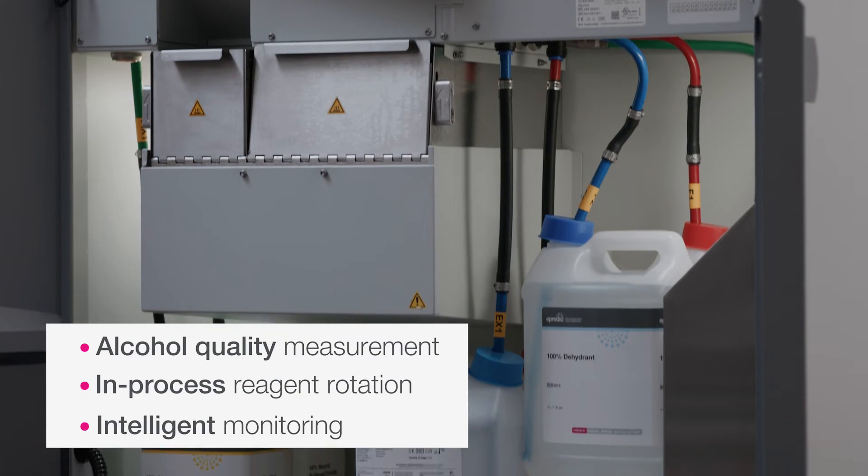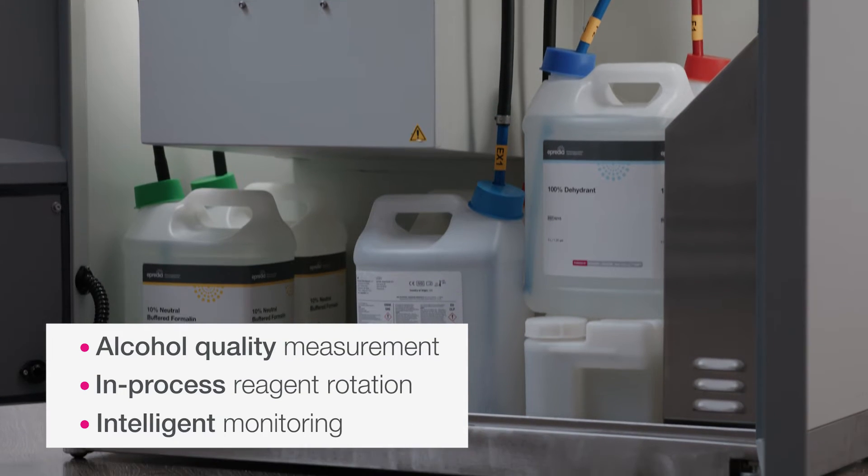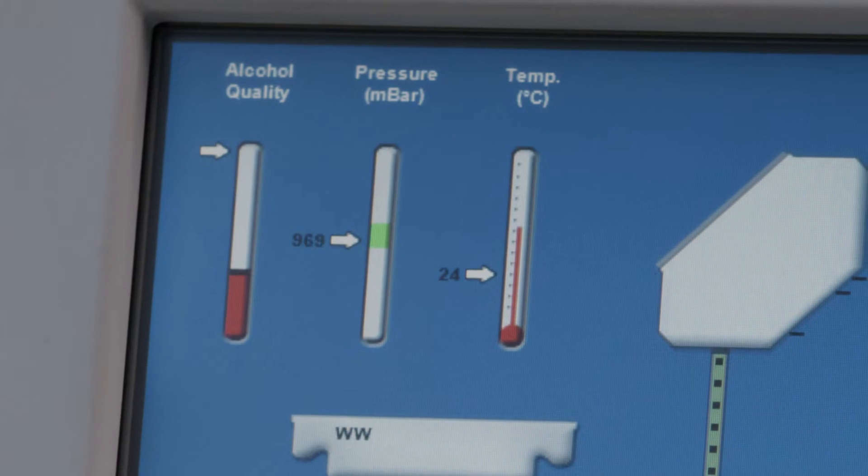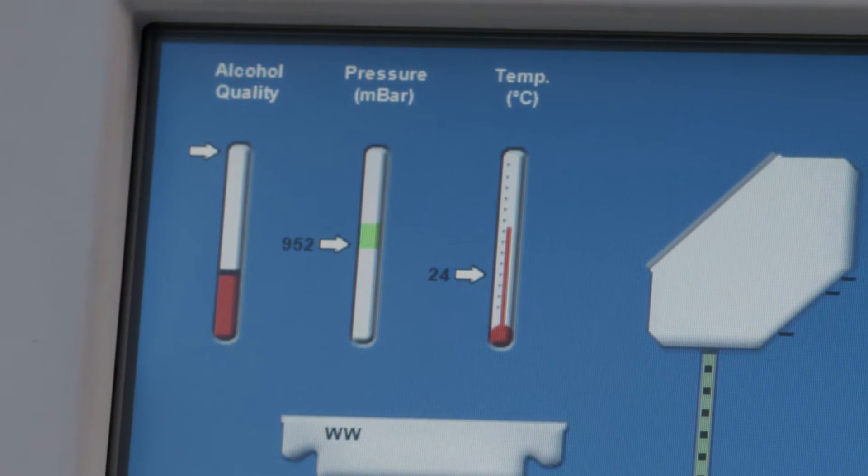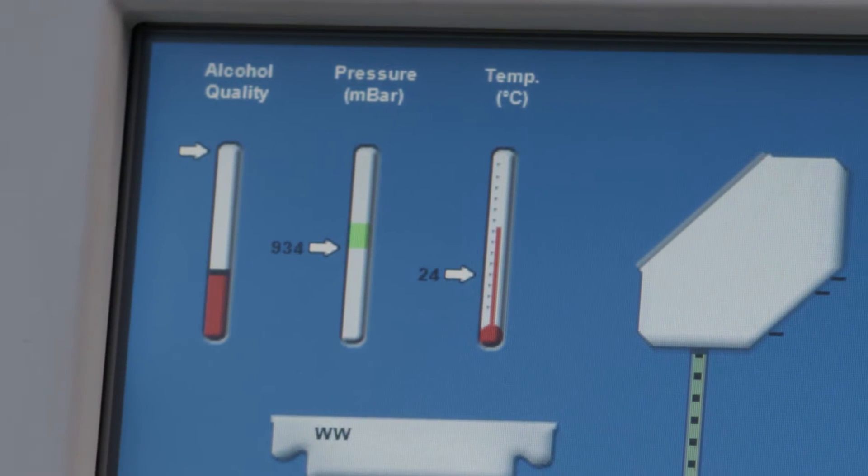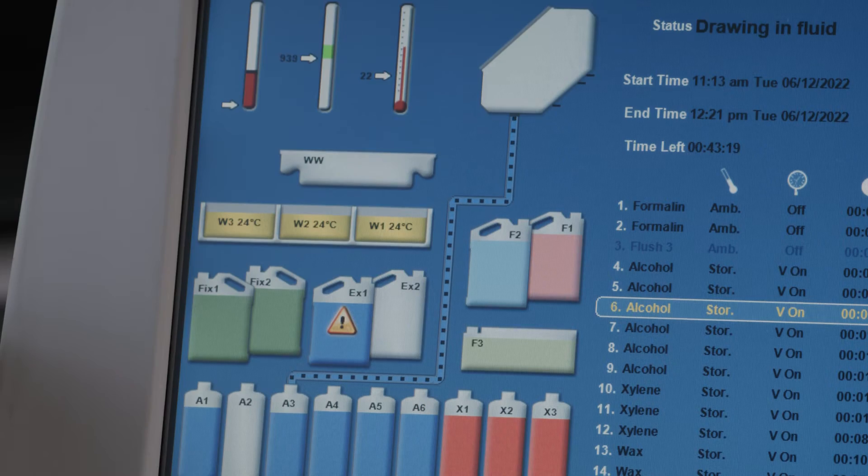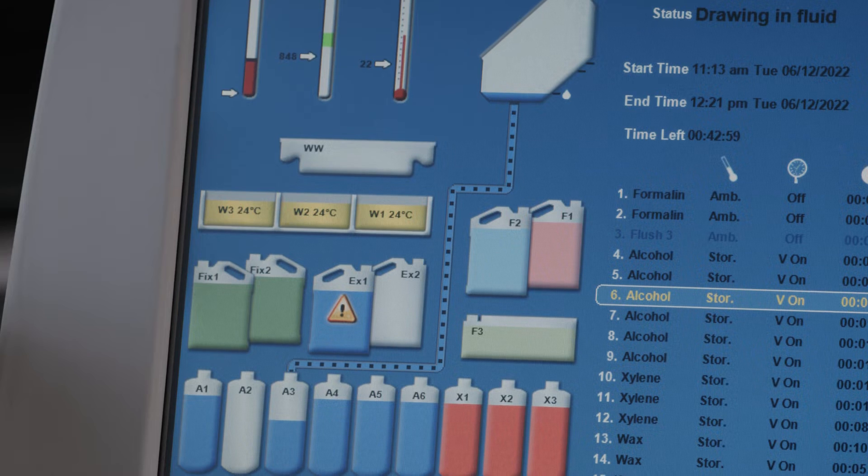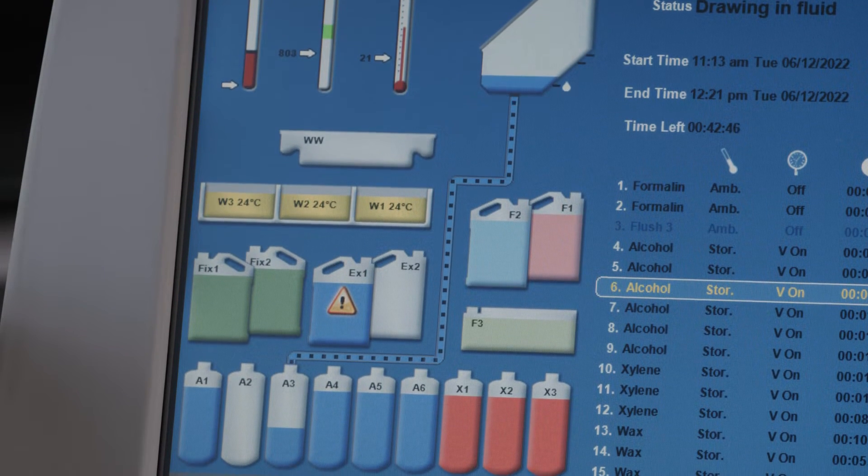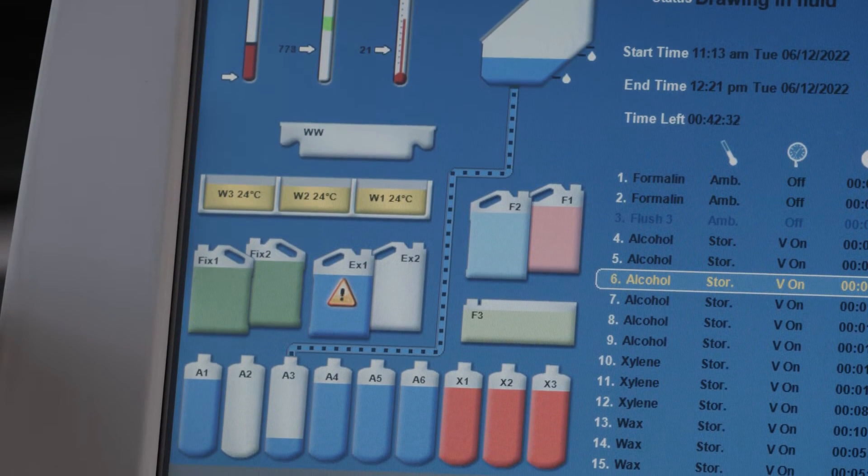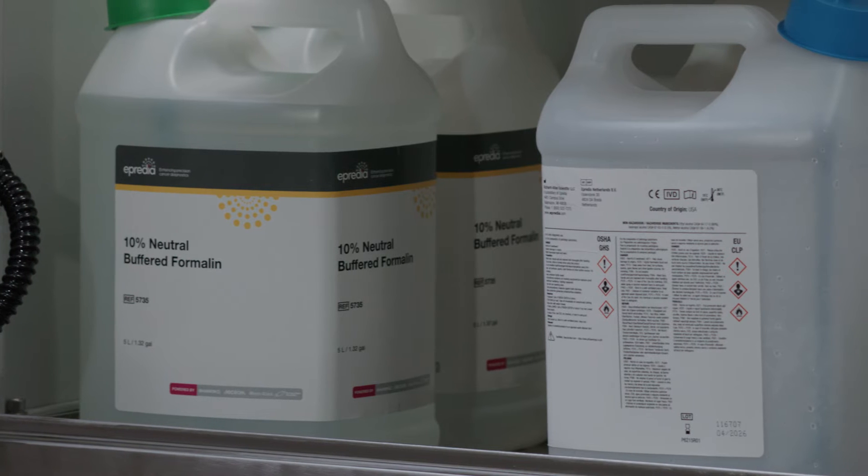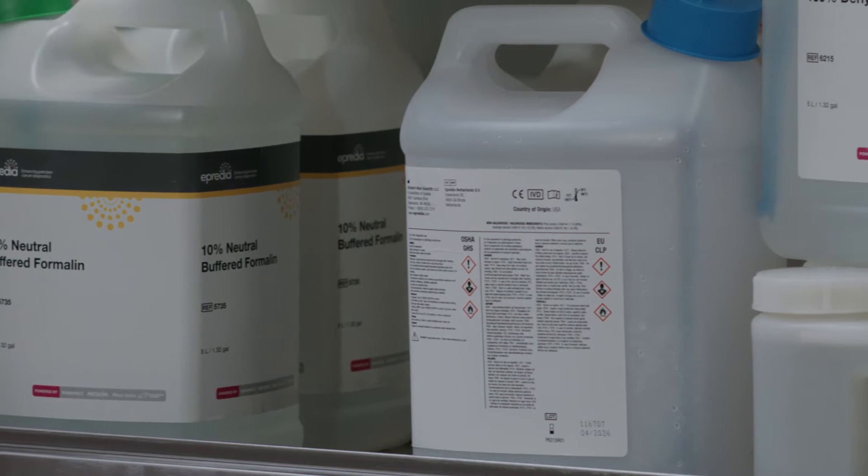The Revos Rotational Tissue Processor has an alcohol quality feature that uses specific gravity to measure your alcohol percentage after every run. It also prompts the automatic rotation of reagents for optimal tissue quality. This feature ensures that the alcohol is rotated at the correct time, extending the life of your reagents and providing significant cost savings each year that align with your budget.